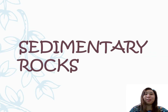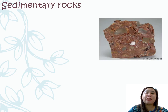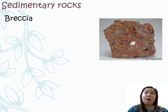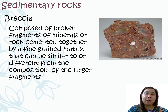Let us now take a look at some examples of sedimentary rocks. One example of sedimentary rock is the breccia. Breccia is composed of broken fragments of minerals or rocks cemented together by a fine-grained matrix that can be similar or different from the composition of the larger fragments. As you can see, the fine-grained matrix here is colored red, while the large fragments can be colored brown, white, or gray.